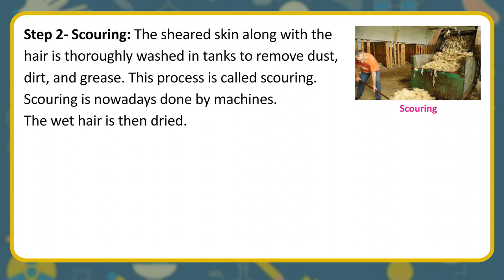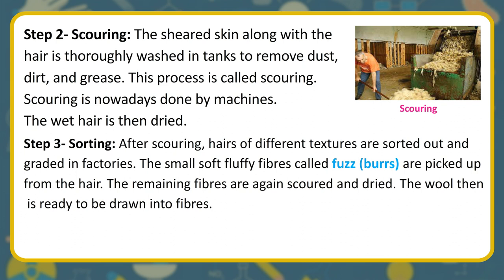Step 2 — Scouring: The sheared skin along with the hair is thoroughly washed in tanks to remove dust, dirt, and grease. This process is called scouring, which is nowadays done by machines. The wet hair is then dried. Step 3 — Sorting: After scouring, hairs of different textures are sorted and graded in factories. The small soft fluffy fibers called fuzz are picked out from the hair. The remaining fibers are again scoured and dried.